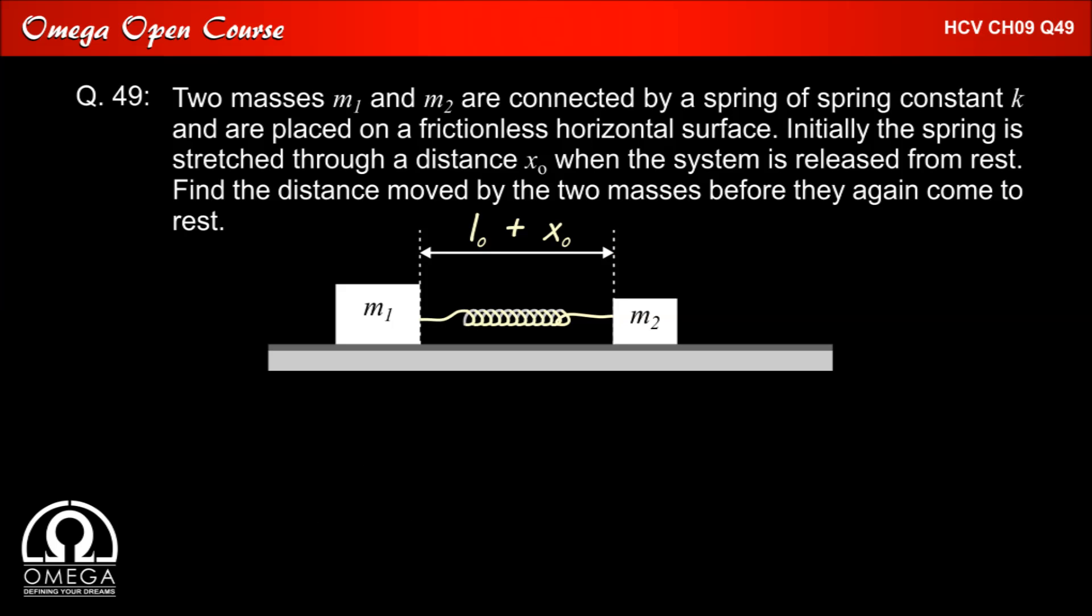Now let us assume that the original length of spring is L0 and it is displaced by a distance x0 as given in the question. So the length of the spring initially must be L0 plus x0, and its elongation is x0.